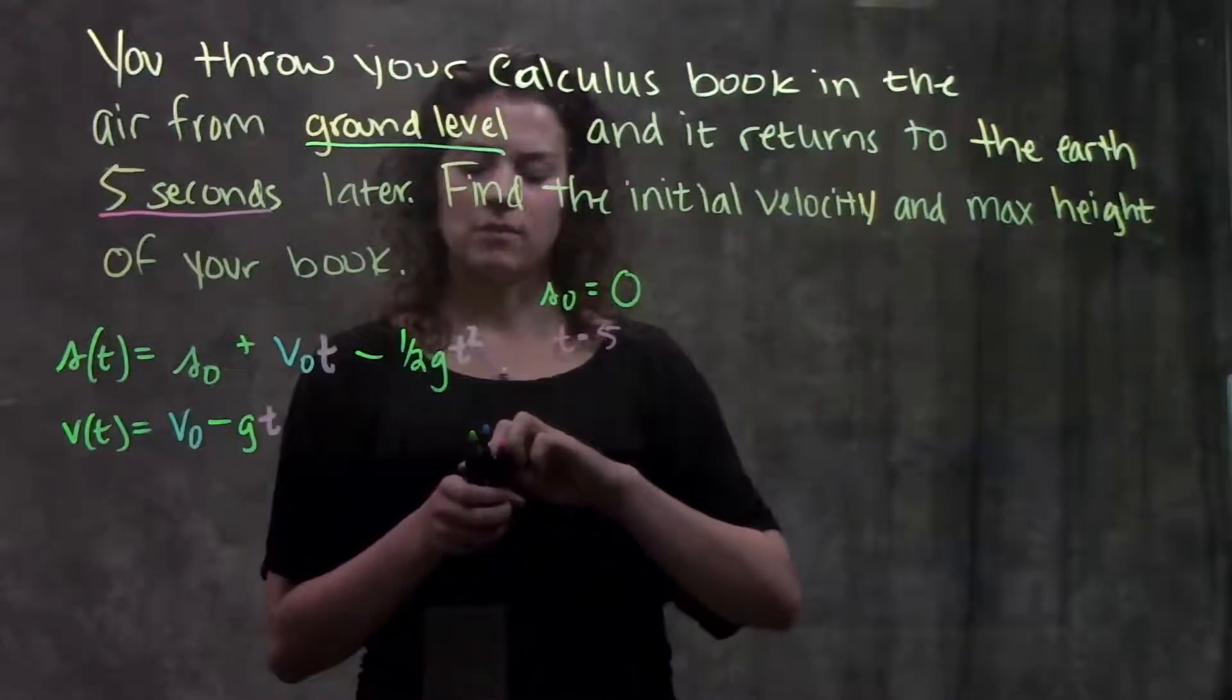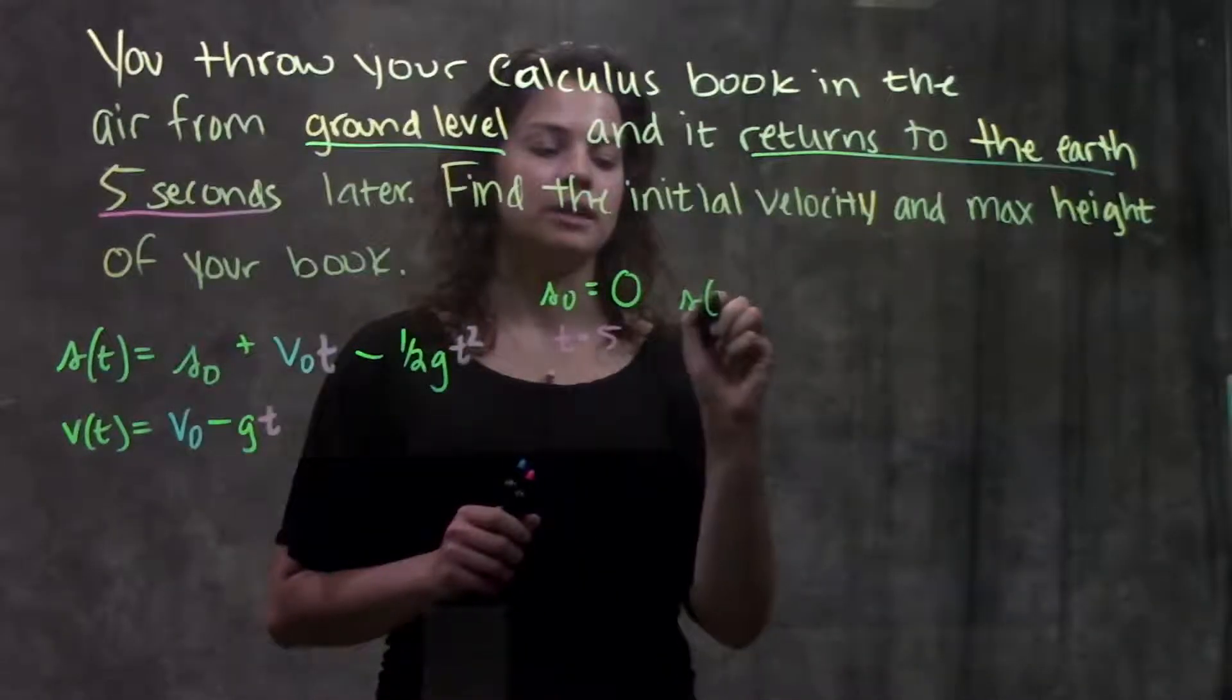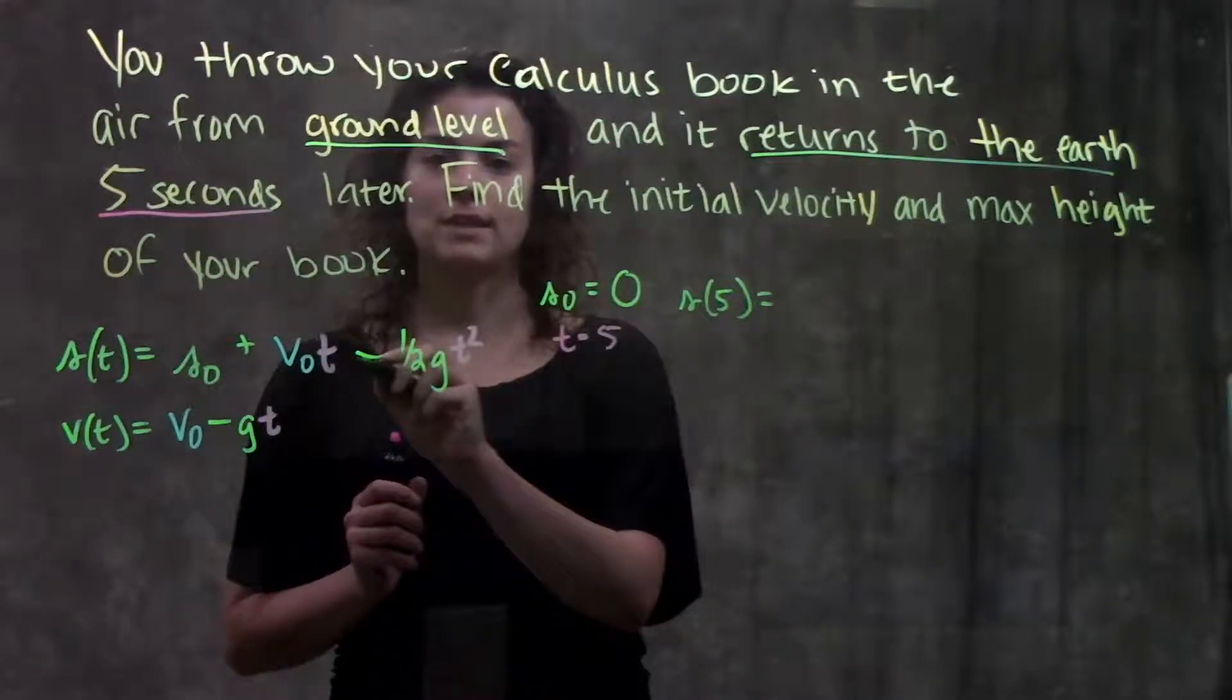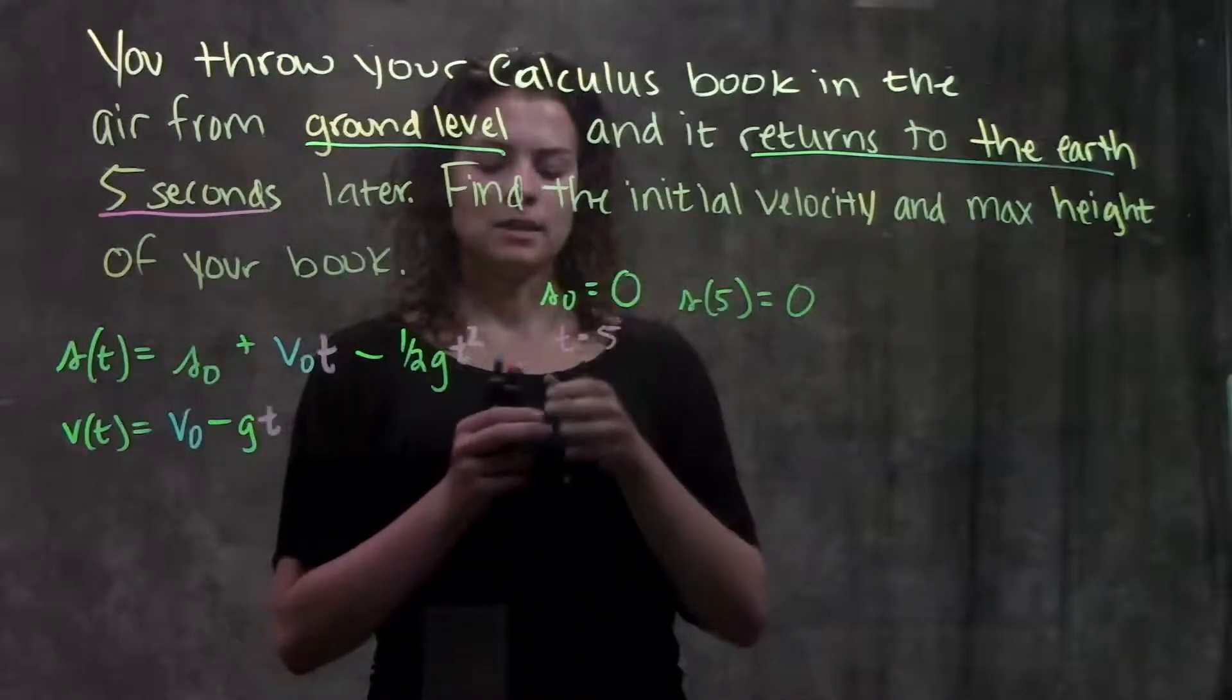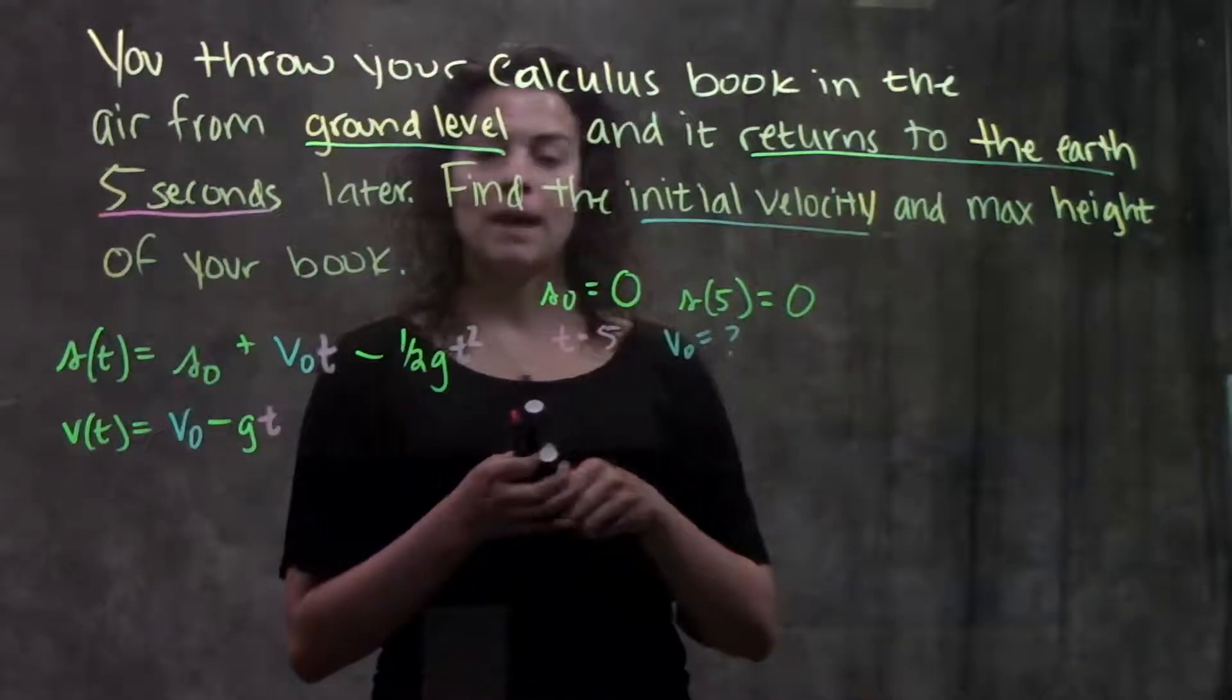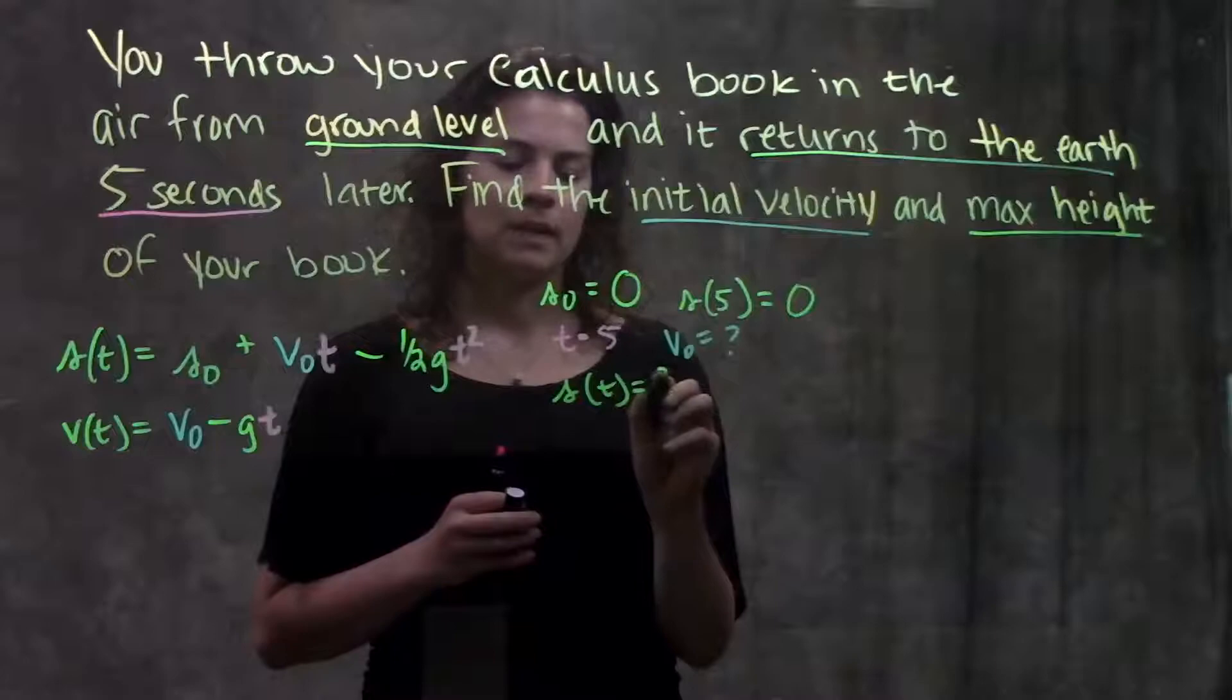And actually this also tells us another value. Because since it's saying that it returns to the earth after five seconds that means that our position at five, if we were to plug five in for t in this function, our position would also be zero since it returned to the earth. And it's asking for the initial velocity which is v₀ and the maximum height. So I'll write that as s(t). Our maximum height at some time t.